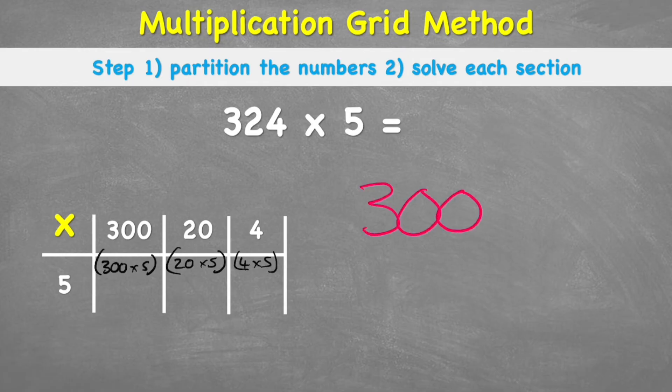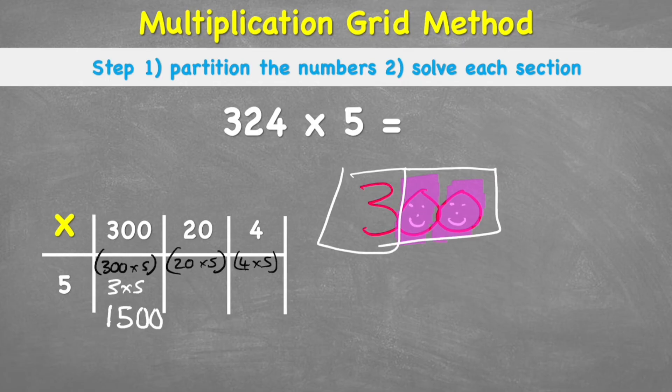Because 300 is actually made up of two happy numbers. These zeros here, I call happy. And the way it works with a happy number is we can just ignore it for a moment and just look at the 3. So my actual question could be 3 times 5. And 3 times 5, I can do in my head, equals 15. But don't forget, I ignored these two happy numbers. So I must now put them back at the end of my answer. And the reason that works is, I've just done 5 times 3. But my question was 5 times 300, which is 100 times larger. So I can make my answer 100 times larger by just putting the two zeros back at the end.